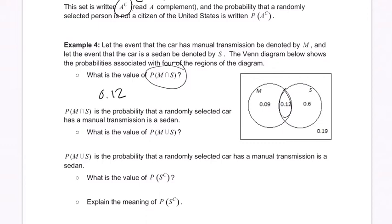What is the value of M union S? It's going to be 0.09 this section right here, plus 0.12 this middle section, plus 0.6 as well. 0.09 plus 0.12 plus 0.6. That equals 0.12 plus 0.6 is 0.72, plus 0.09 is 0.81. It's pretty high, right?